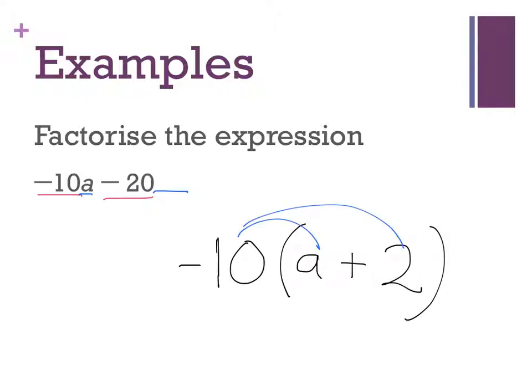Okay, let's check to see if I've got it right. Okay, negative 10 multiplied by a is negative 10a. Negative 10 multiplied by positive 2 is negative 20. Hey, that matches that. Excellent.